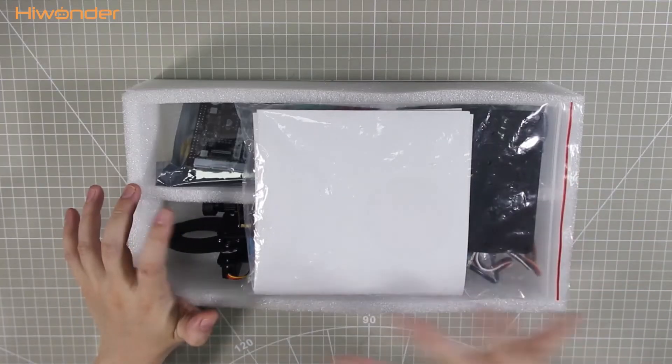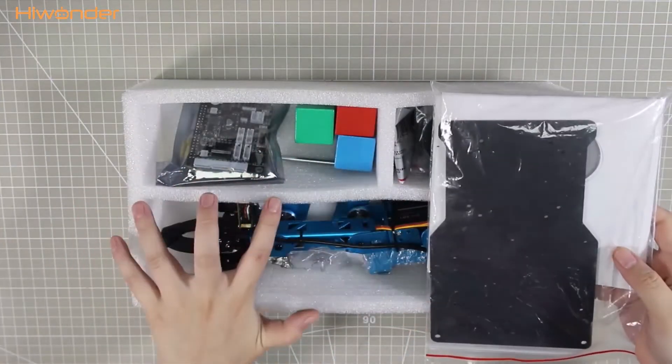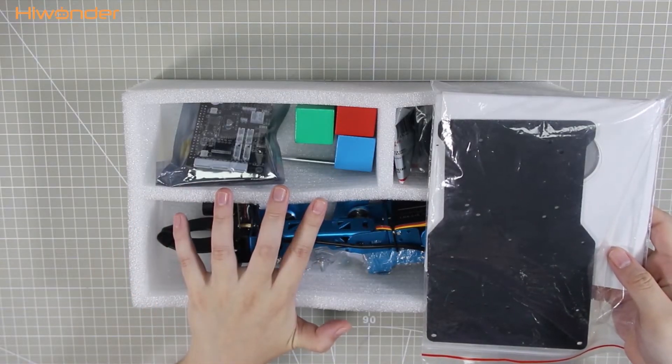Hi guys, this video will show you what things are included in Unpai Mini package. Unpai Mini is half assembled and the other part needs to be assembled by yourself according to the tutorial.